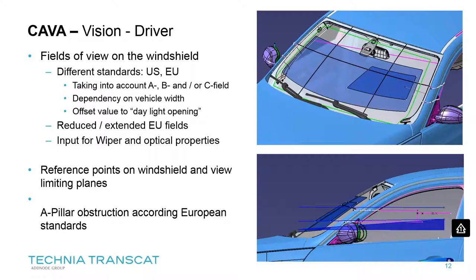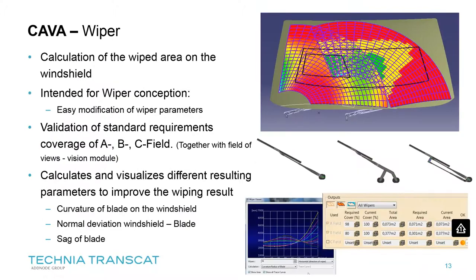The results of the KAVA analysis of the A and B fields can be fed into the wiper analysis, and it can be directly verified whether the wiper cleans the A field to 100% or the B field to the required 85%. Also important for forward driver vision is detecting the reference points and view-limiting planes on the windscreen under ECE R125, as well as A-pillar obstruction checks required by European standards. This is a quite complicated measurement to do by hand, and KAVA has an automated check to quickly verify A-pillar obstructions according to European standards.